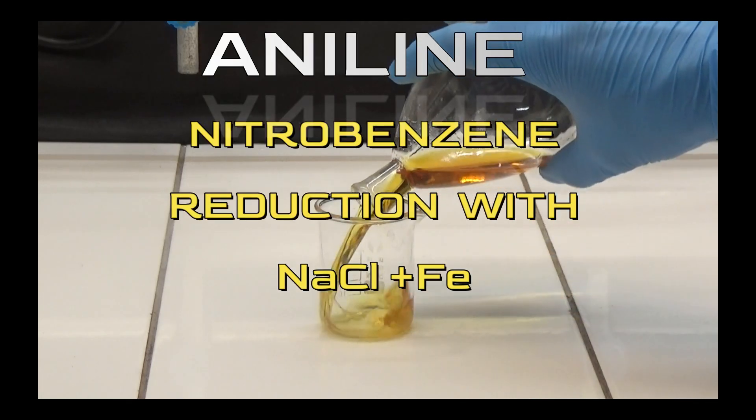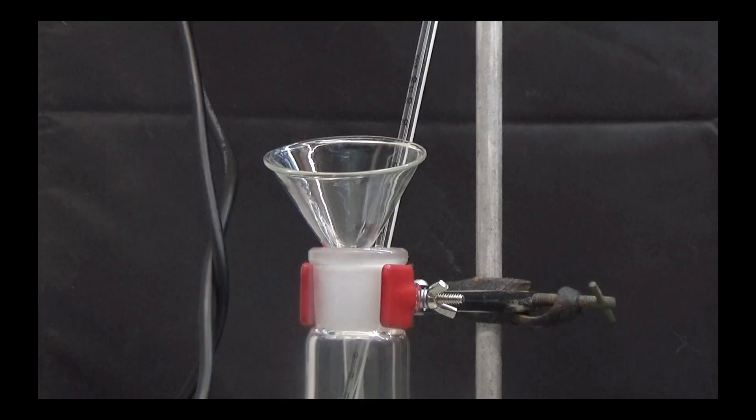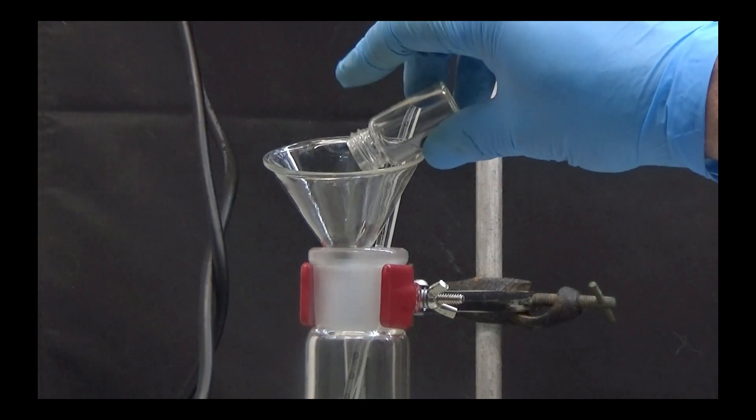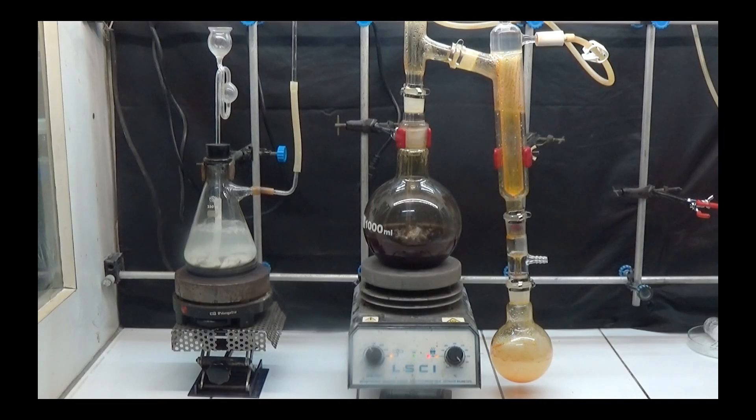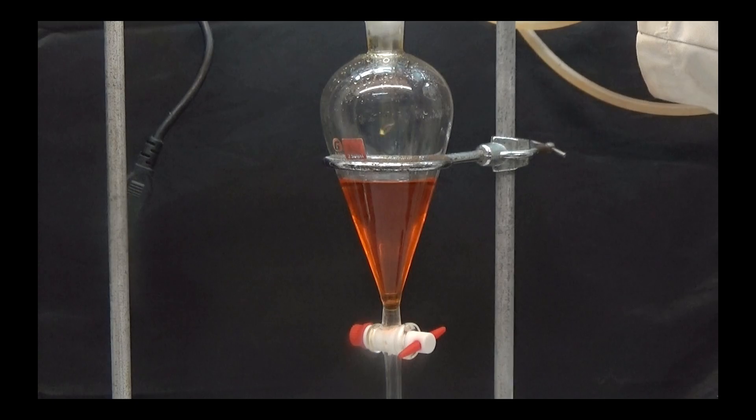In this video we will obtain aniline by reducing nitrobenzene with sodium chloride and iron powder, separate it with steam distillation, and purify it by converting it into its hydrochloride.